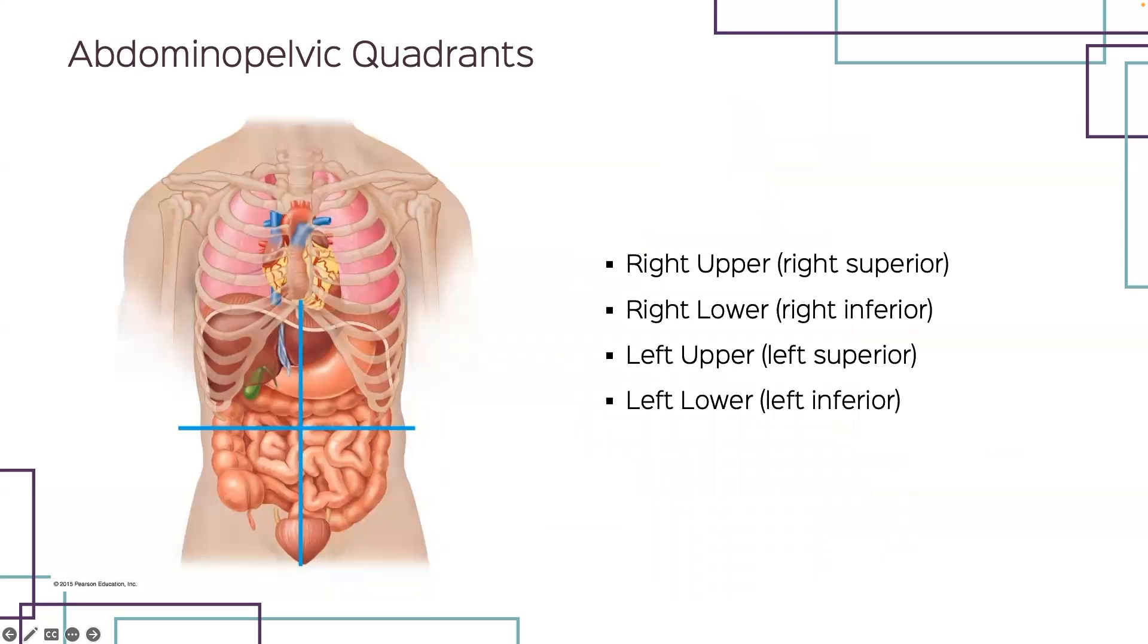To make it easier to locate organs within the abdominopelvic cavity, we have divided them into four different abdominopelvic quadrants. The midsagittal and the transverse planes pass through the navel area and divide that into four quadrants: right upper, right lower, left upper, and left lower. Again, your right upper is on your left and your left lower is on your right.